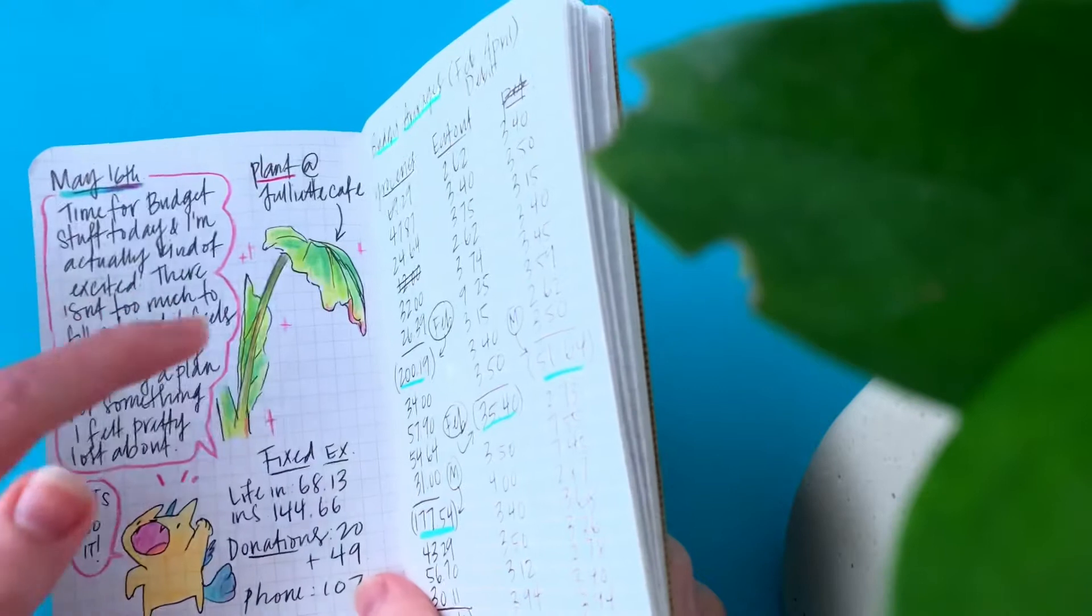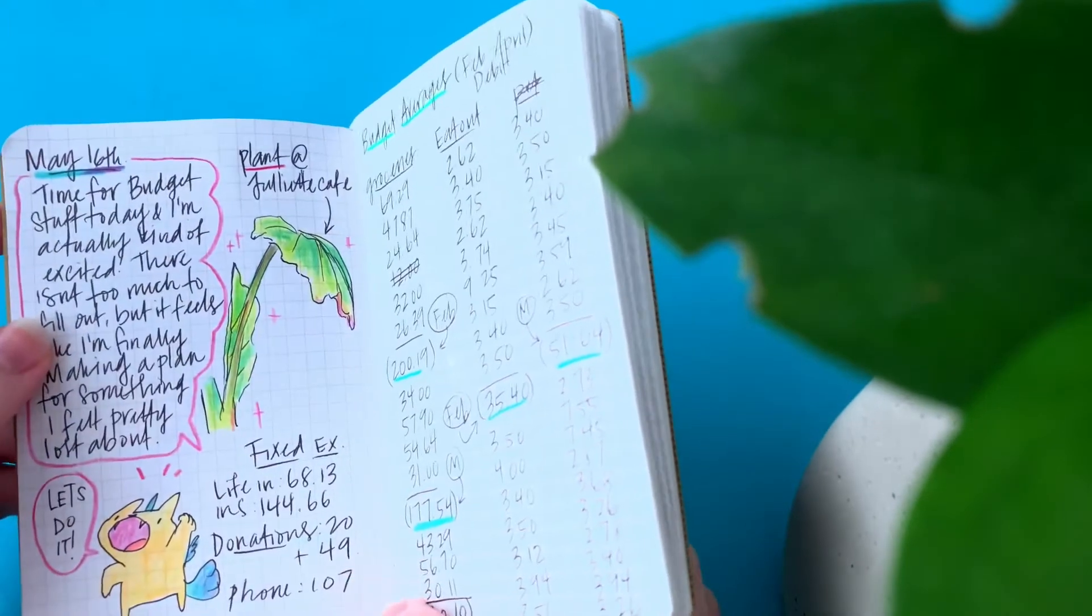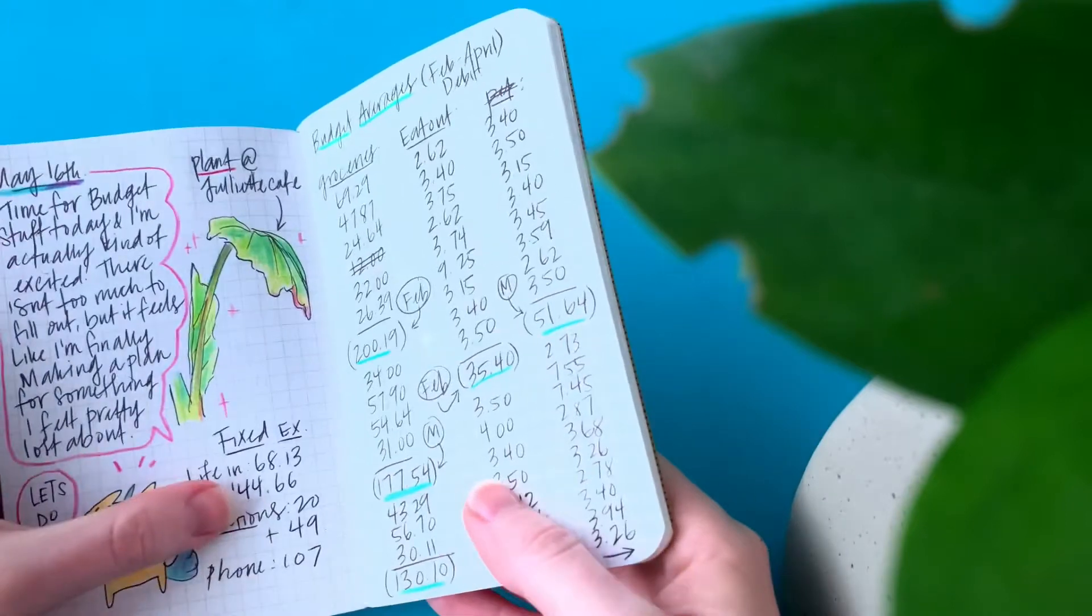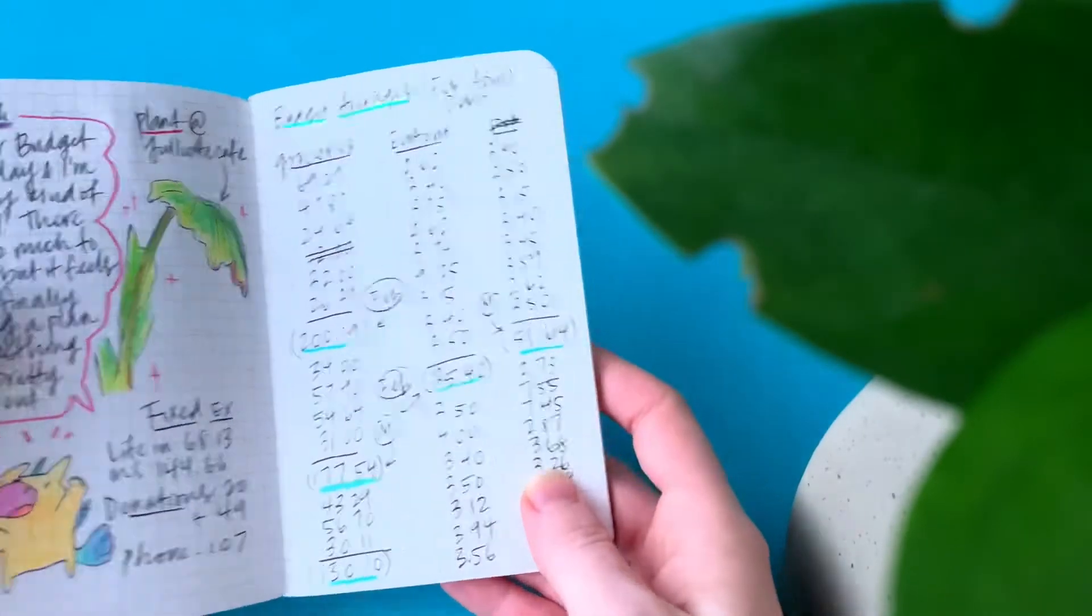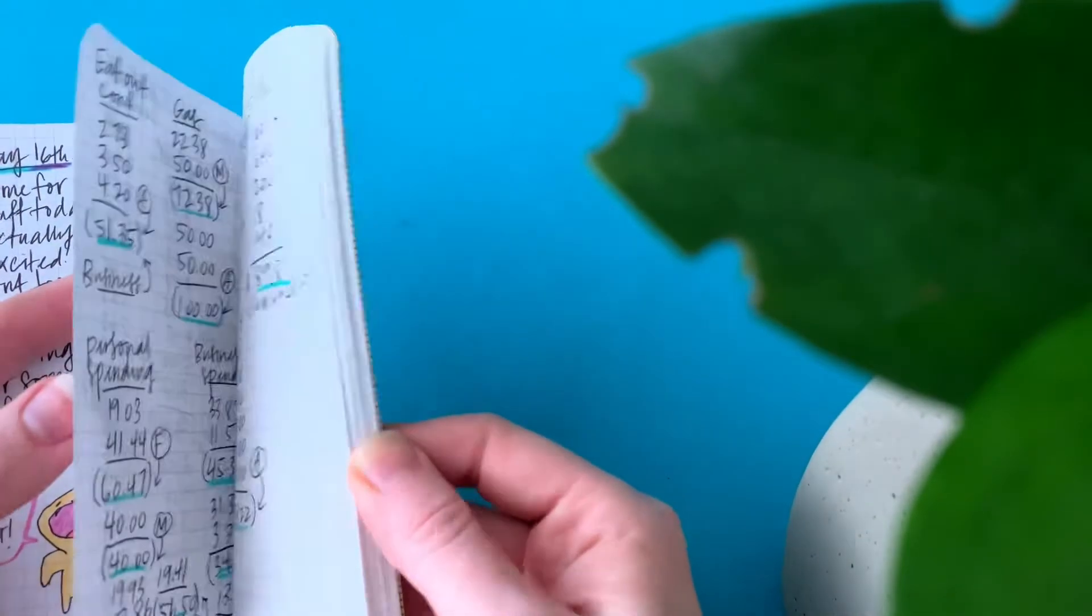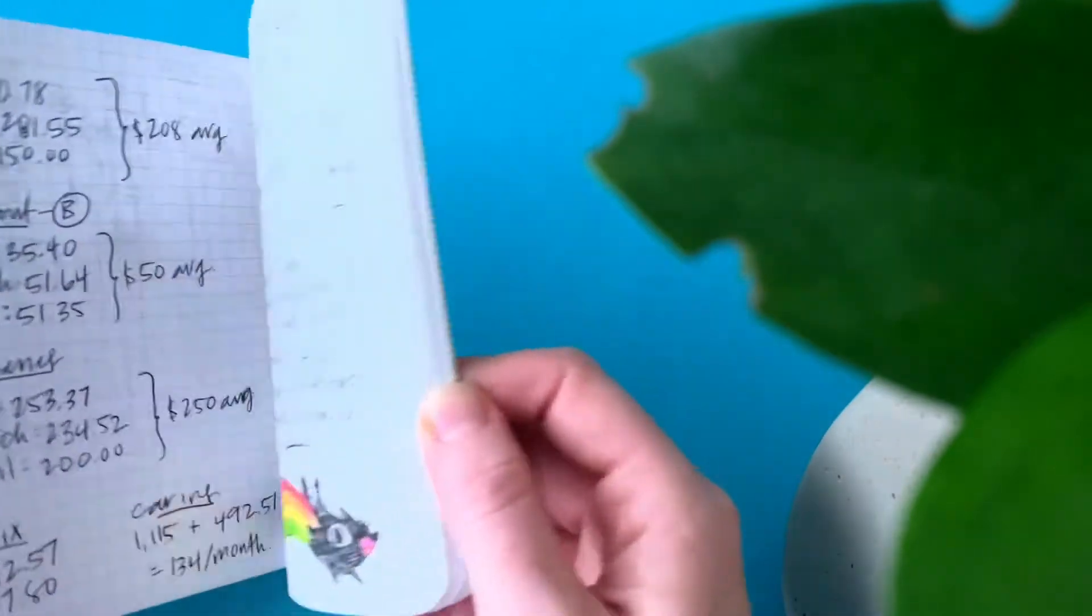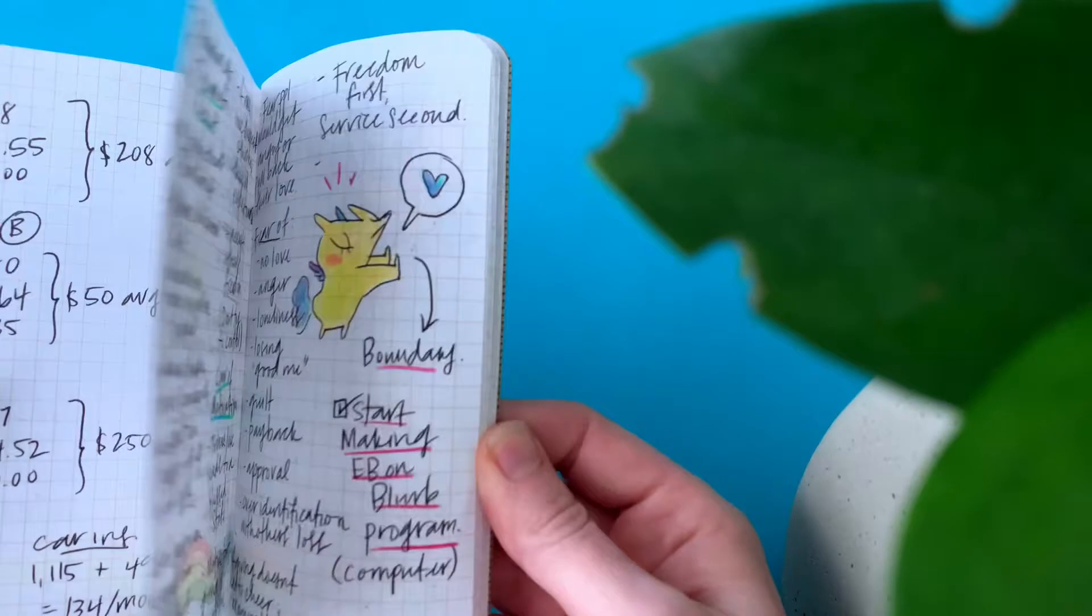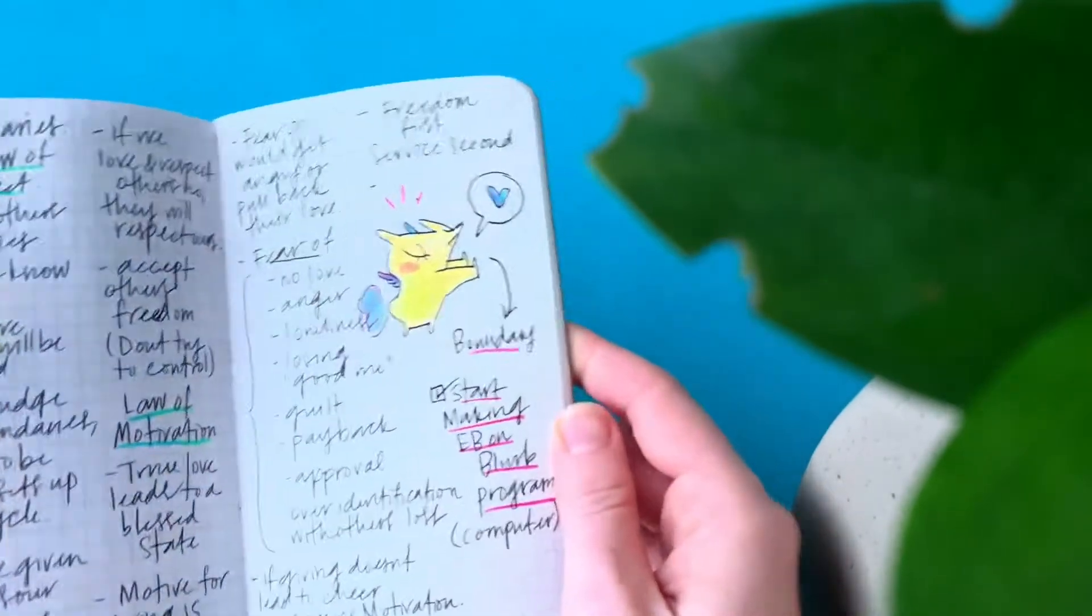This was at a cafe. They had this really cool plant so I wanted to draw it. That's funny. This was me being like, oh my gosh, I can budget. And I was writing down all my amounts and then I got really frustrated and I'm like, why did I think budgeting would be fun? I don't know. But I did. Until it wasn't.